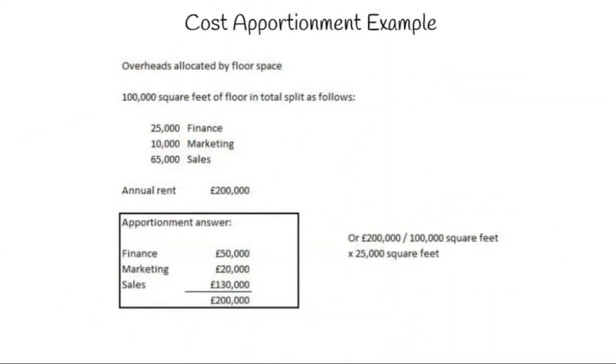To split the indirect costs by the relevant cost centres we use apportionment. If we take this example of floor space, finance has 25,000 square feet, marketing takes up 10,000 square feet and sales takes up 65,000 square feet. Overall we have 100,000 square feet of floor in the office.